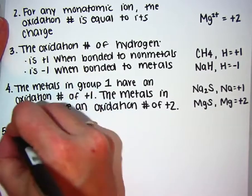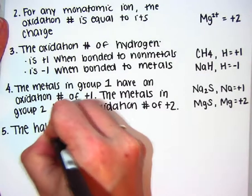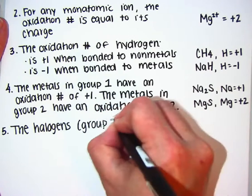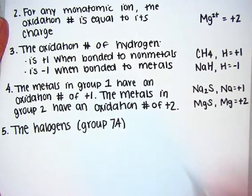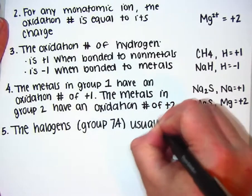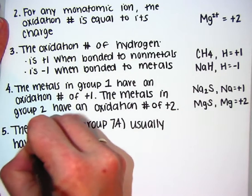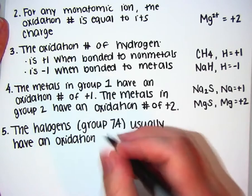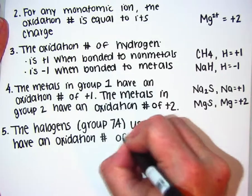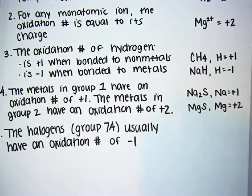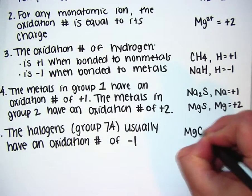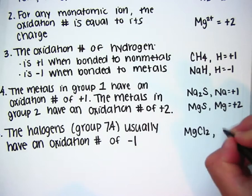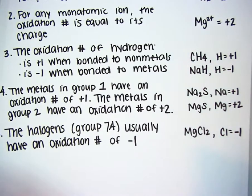Rule number five: the halogens — group 7 on the periodic table — usually have an oxidation number of minus one. For example, in magnesium chloride, chlorine is a halogen in group 7, so it has an oxidation number of minus one.